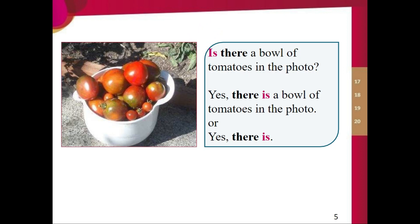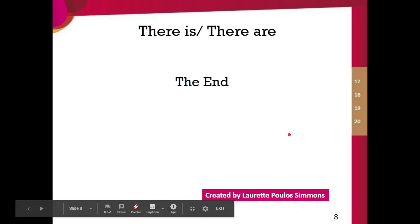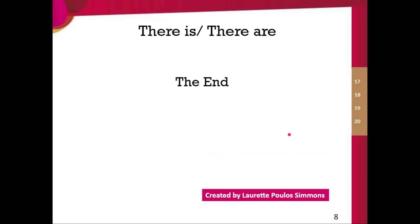Look at this example. We can see the tomatoes here. The bowl. This is the bowl. Is there a bowl of tomatoes in the photo? Yes, there is a bowl of tomatoes in the photo. Or you can say yes, there is. That's the short answer. Are there many tomatoes in the bowl? Yes, there are many tomatoes in the bowl. That's the full answer. And here we have the short answer. Yes, there are. And that's it for there is and there are.